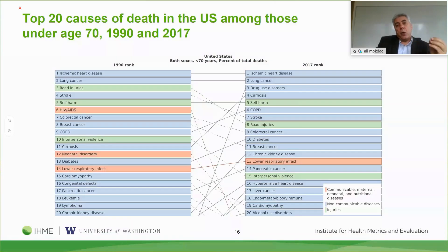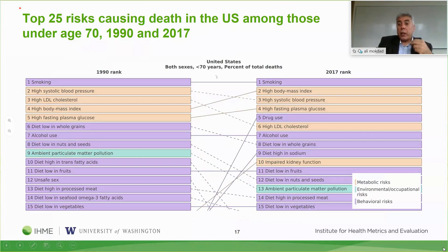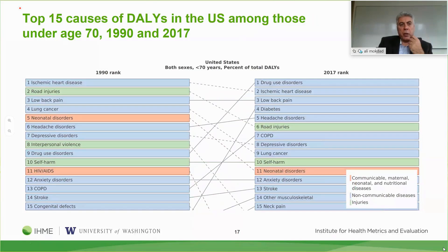Looking at the top 20 causes of death—mortality in the United States—ischemic heart disease was number one in 1990 and still is in 2017, but the biggest increase was for drug use disorder. Cirrhosis increased as well, self-harm has remained at five, and COPD and diabetes are increasing causes of death. Looking at risk factors contributing to premature mortality under 70: smoking is number one, but high body mass index is increasing to number two, explaining the rise in diabetes. Systolic blood pressure is coming down to number three, high fasting plasma glucose reflects the diabetes burden, and drug use has become number five due to the ongoing epidemic.